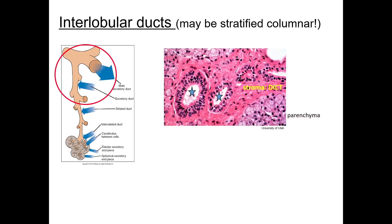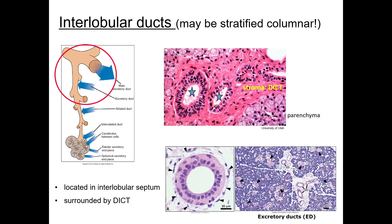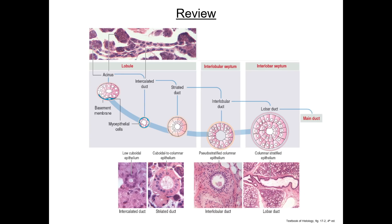The saliva then moves through the interlobular duct, lined initially by columnar epithelium and later by pseudostratified columnar epithelium. These ducts lie in the stroma of the gland and are always found surrounded by connective tissue. They eventually drain into excretory ducts in the septa between the lobes of the salivary gland, where one can also see nerves and vessels. A useful cartoon summarizes the histological differences within the salivary gland duct system.